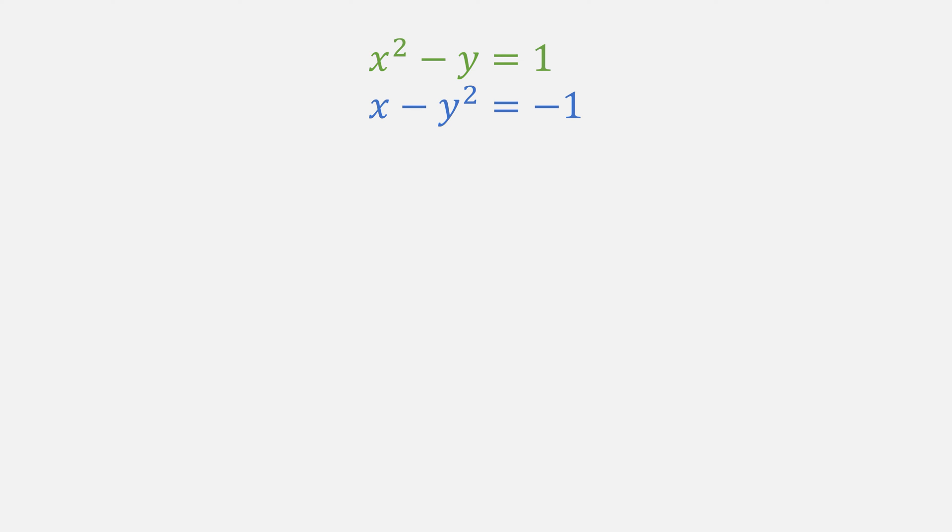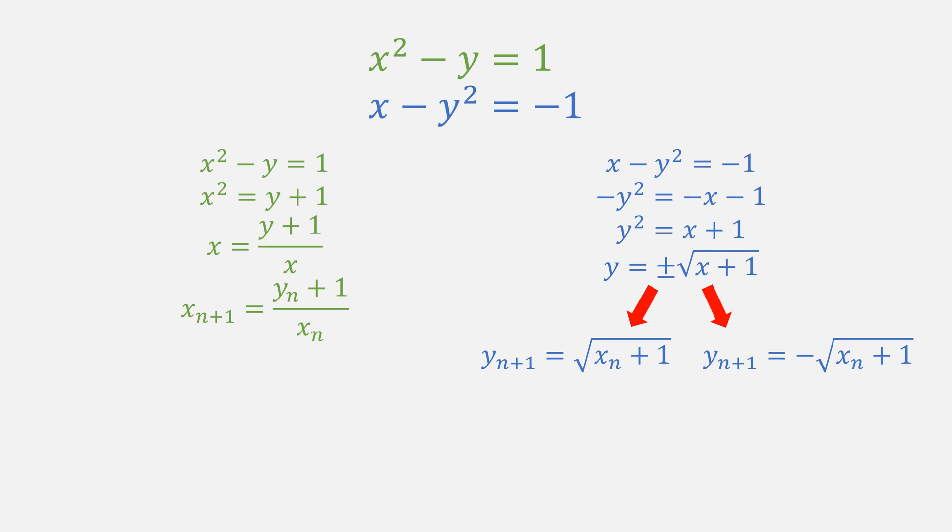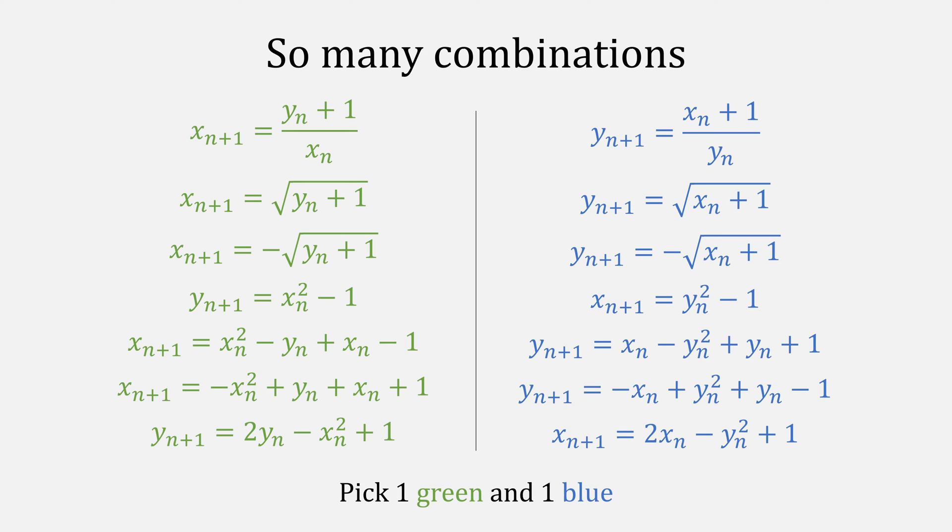So let's rewrite these expressions. First, the green one. We can simply take y to the other side, and then divide everything by x, giving us x sub n plus 1 is equal to y of x sub n plus 1 over x sub n. For our other equation, we can move x over, then divide everything by minus 1, and take the square root. Of course, this gives us two answers for our new y. Therefore, we can break this up into two separate solutions. As you might imagine, there are many different ways that we can rearrange these functions. Regardless, you'll still need to have one that you created from the first function and one that you created from the second, in this case one green and one blue.